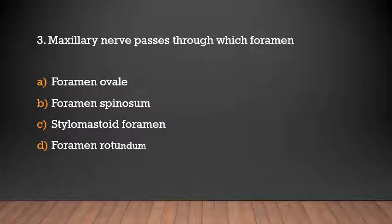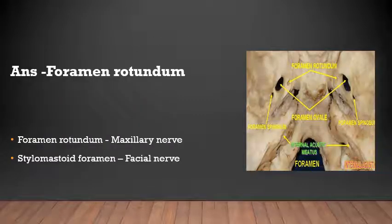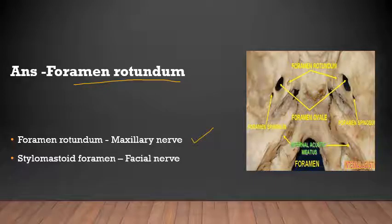Maxillary nerve passes through which foramen? Foramen ovale, foramen spinosum, stylomastoid foramen, or foramen rotundum? The answer is foramen rotundum — the maxillary nerve passes through foramen rotundum. And the facial nerve passes through the stylomastoid foramen.